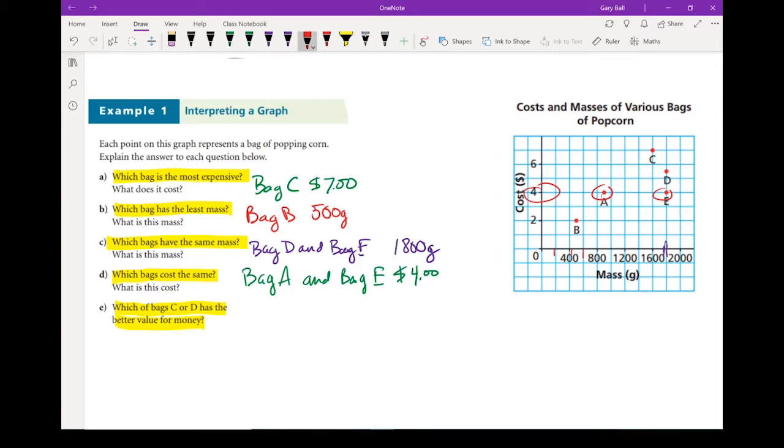But when I look at bag A, it's only got about 900 grams. Look at that. But bag E is up here at 1800 grams, but it's getting the same price. Bag E, you're getting more popcorn. I'm going to say the answer is bag E. You get more for less. More, less cost.